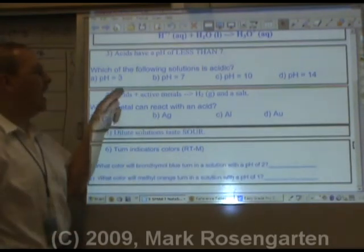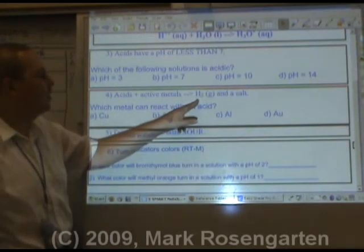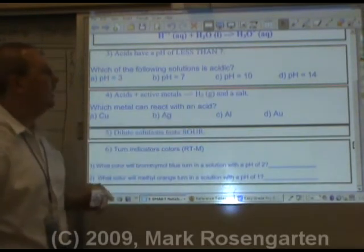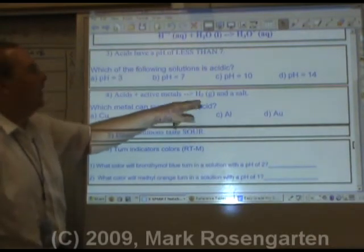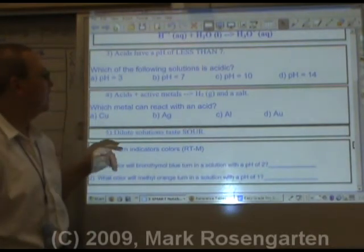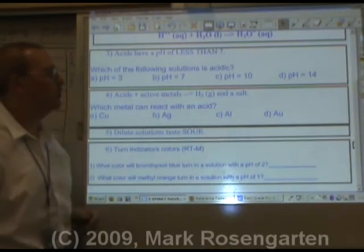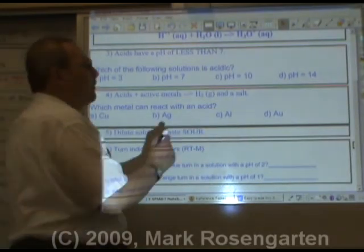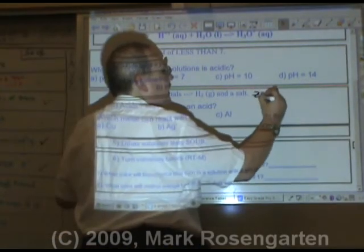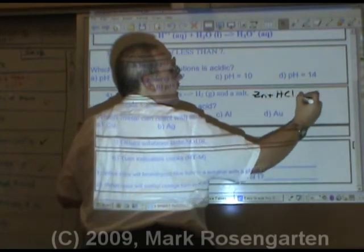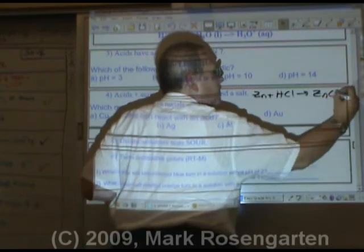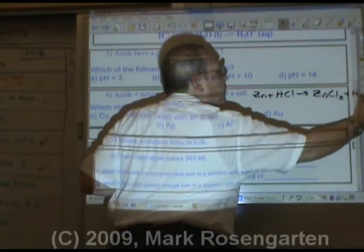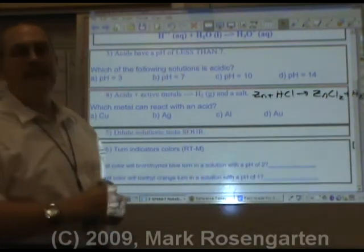Acids can oxidize active metals to form hydrogen gas and the salt. You see, the hydrogen from the acid forms H2, and the other ion combines with the active metal to form the salt. For example, if we were to take zinc and react it with hydrochloric acid, the zinc would take the hydrogen's place, form zinc chloride, and the hydrogen would go off on its own as diatomic hydrogen.